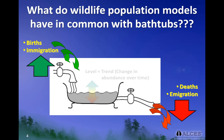The balance between the rate of inflows — births and immigration — and outflows — deaths and emigration — gives us the actual number of animals in our bathtub model. By tracking the number of animals, or the level of water over time in our bathtub model, we can monitor trend.